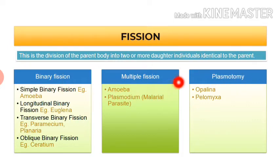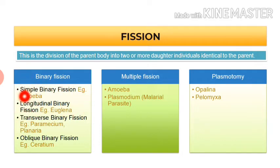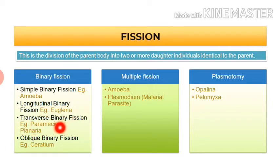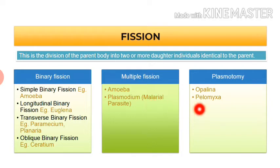Examples to remember: simple binary fission occurs in Amoeba; longitudinal binary fission occurs in Euglena; transverse binary fission occurs in Paramecium and Planaria; oblique binary fission occurs in Ceratium. Multiple fission occurs in Amoeba and Plasmodium, which is a malarial parasite. Plasmotomy occurs in Opalina and Pelomyxa.